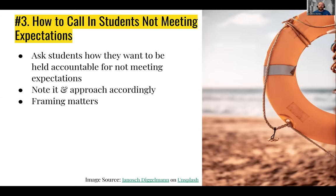There's also the question of how to call in students who aren't meeting those expectations. Again, this is a discussion to have with the class. Ask them how they want to be held accountable. If students aren't meeting expectations, at what point should other students, the class as a whole, or the instructor step in? As the class discusses this and comes up with individual or blanket plans, take note and approach accordingly — use the class to leverage a responsible way of calling them in.